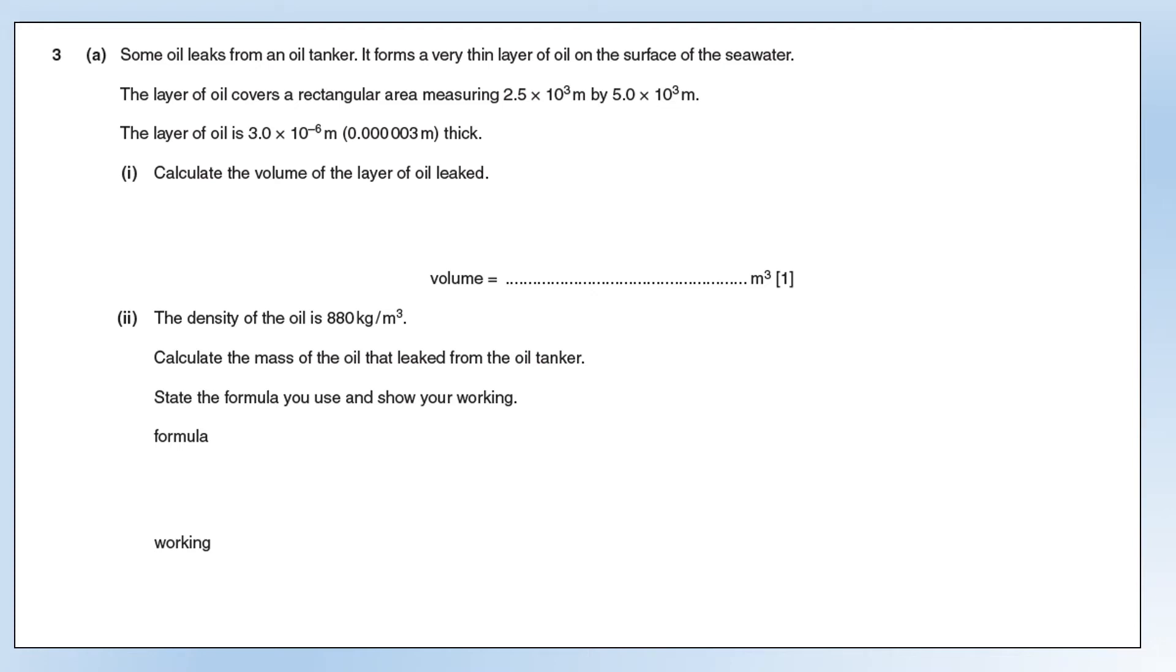Alrighty, so in this video we're going to take a look at some of the physics section from the Coordinated Science IGCSE. We're going to start with question 3, which is the first physics question. We've got a layer of oil with a rectangular area, and we've got the dimensions of that rectangle, and we also have the thickness of the oil. So calculate the volume of the oil. Essentially it's going to be the shape of a cuboid, so we're just going to multiply all the sides together.